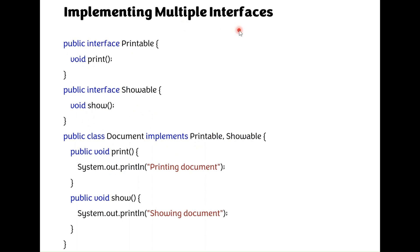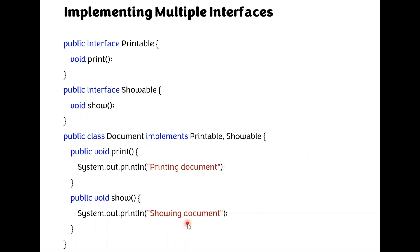To implement multiple inheritance using the interface: one interface named Printable has one abstract method print, and another interface named Showable has one abstract method show — these are two independent interfaces. The public class Document implements both Printable and Showable. A class can implement more than one interface but can extend only one class, which is why multiple inheritance is implemented using interfaces. Both the print and show methods have been implemented in the class.